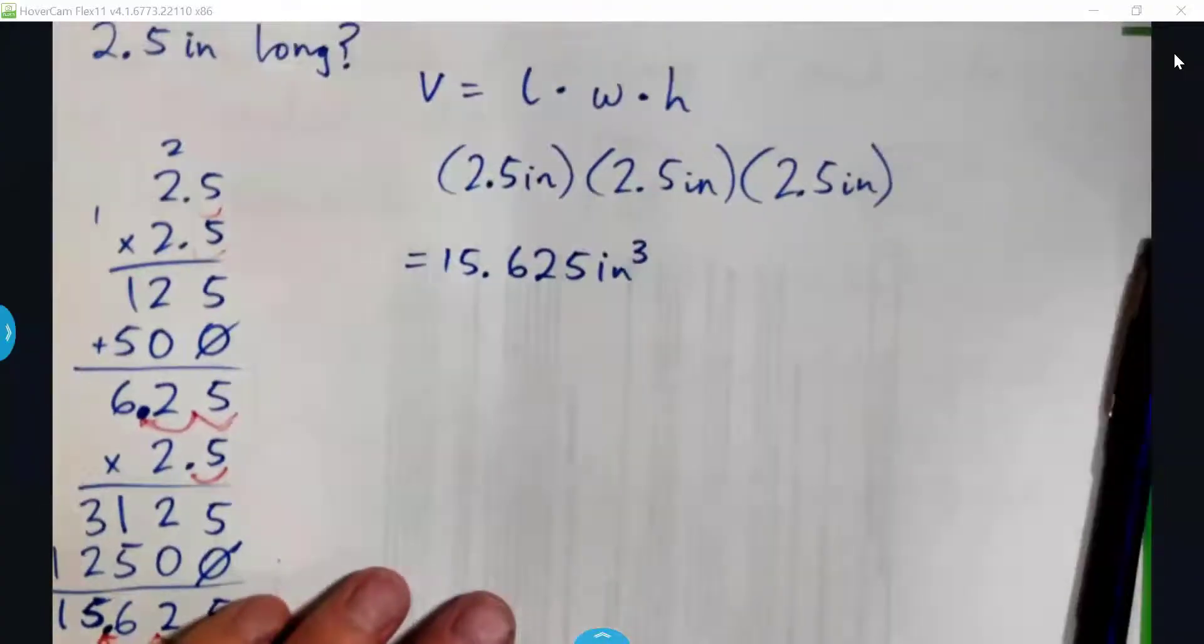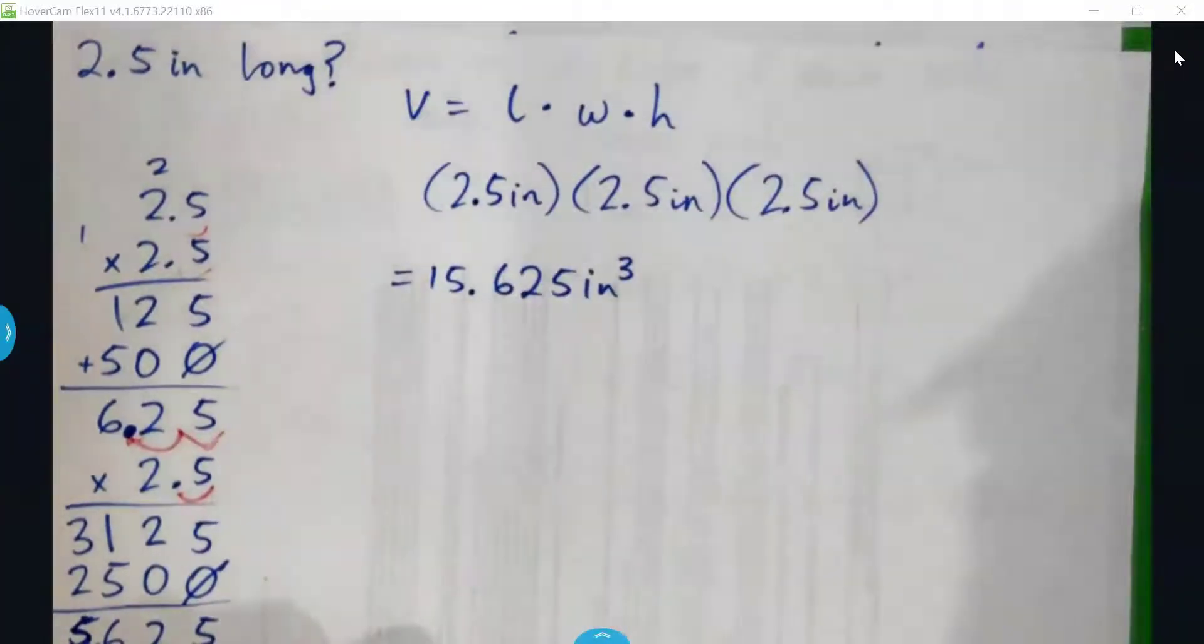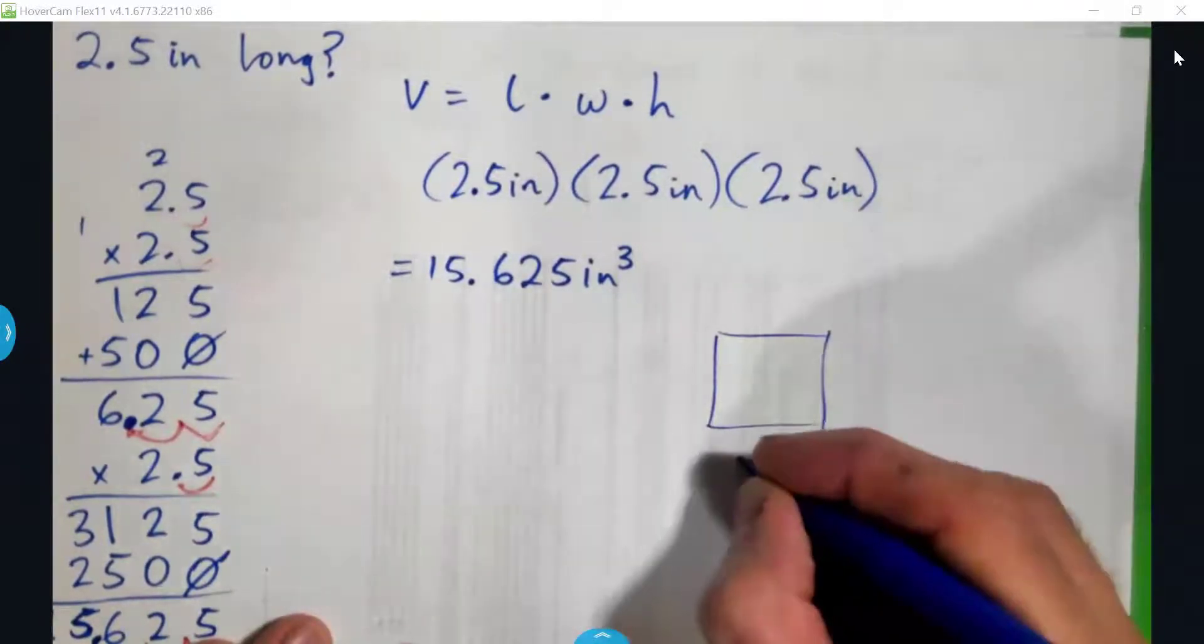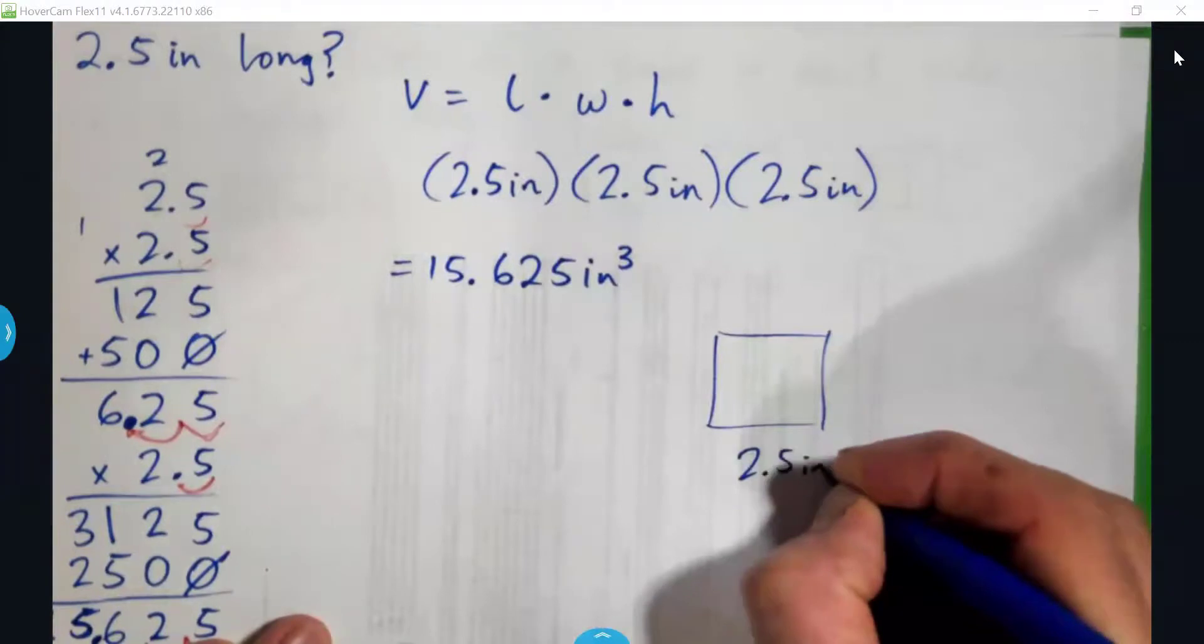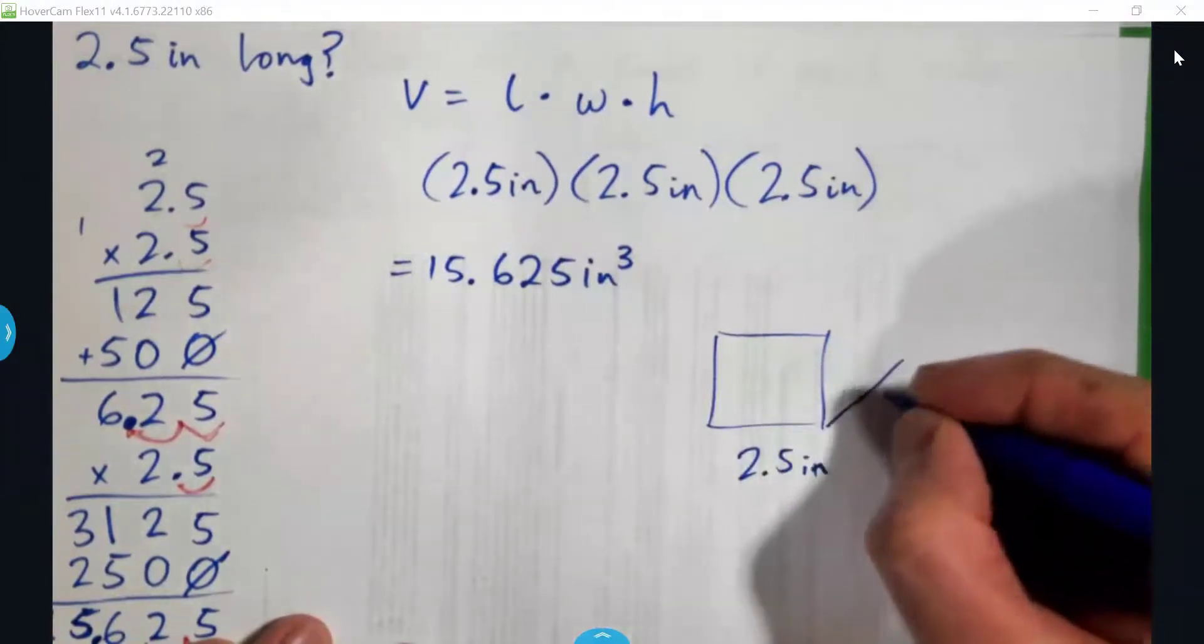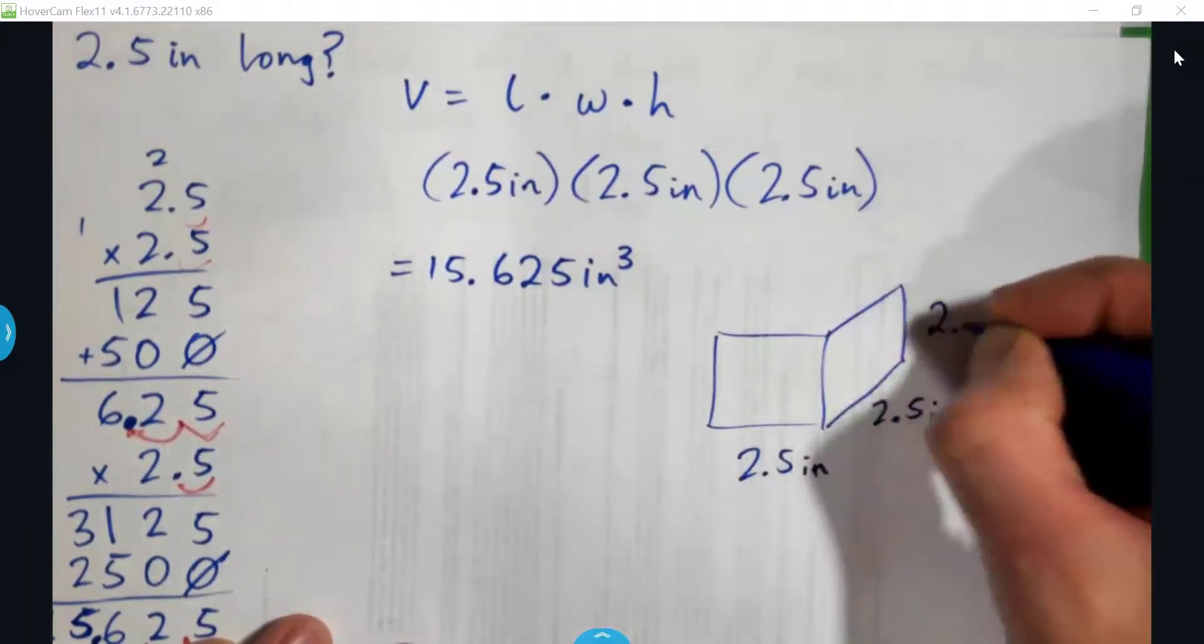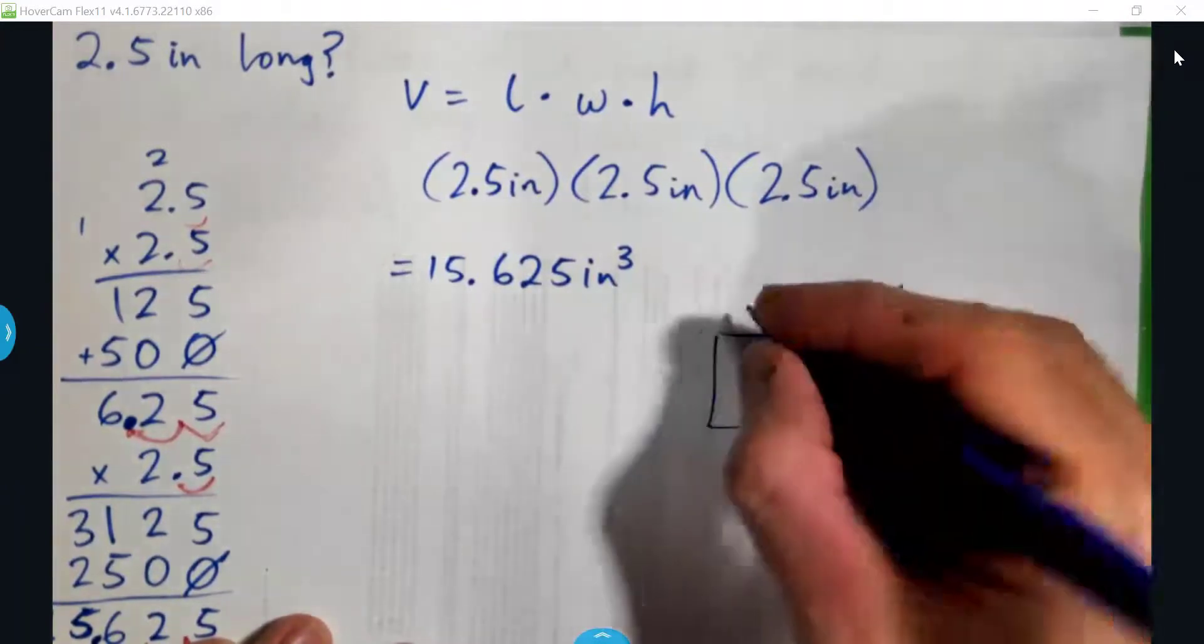All right, yeah, so that is actually correct, funny enough. So basically what we have again is a cube that is 2.5 inches wide, 2.5 inches long, and 2.5 inches high.